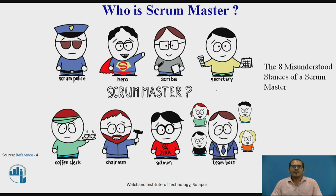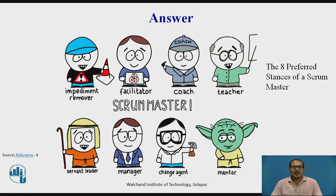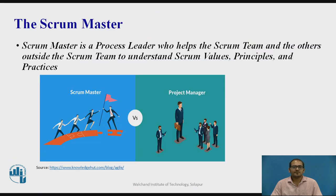Who is the Scrum Master? There are eight misunderstood stances of the Scrum Master. Is he a Scrum Police, Hero, Scribe, Secretary, Coffee Club, Chairman, Admin, or Team Boss? No, he is not. The eight preferred stances of the Scrum Master are: Impediment Remover, Facilitator, Coach, Teacher, Servant Leader, Manager, Change Agent, and Mentor. The Scrum Master is a process leader who helps the Scrum team and others outside the Scrum team to understand Scrum values, principles, and practices.